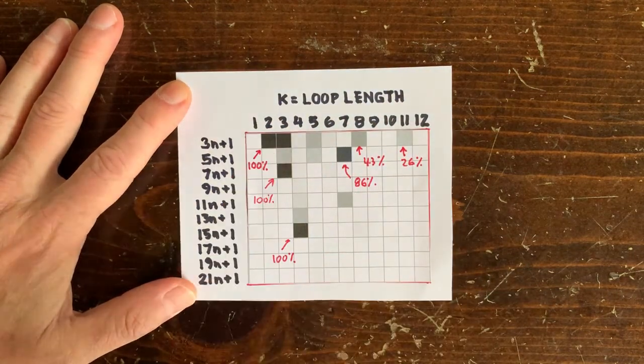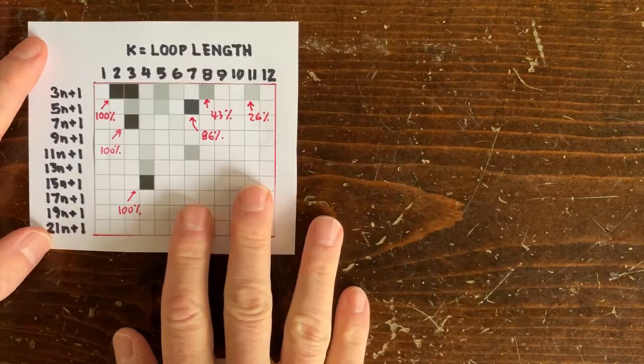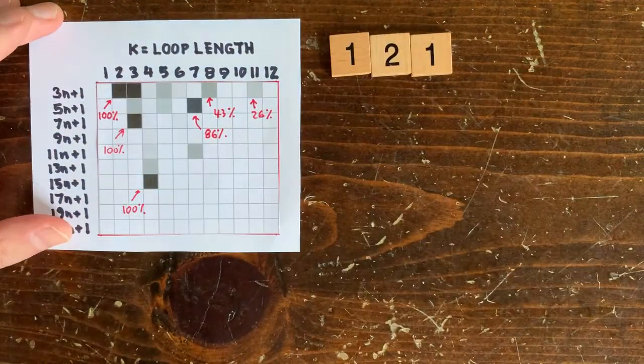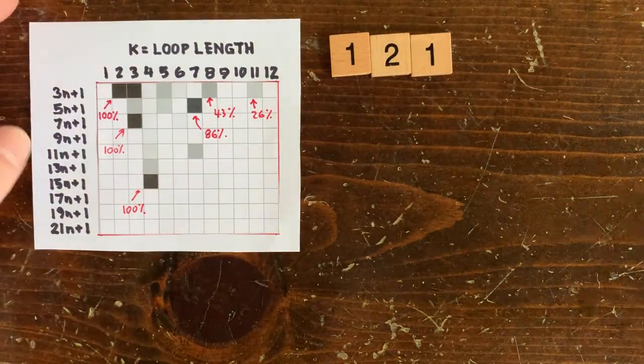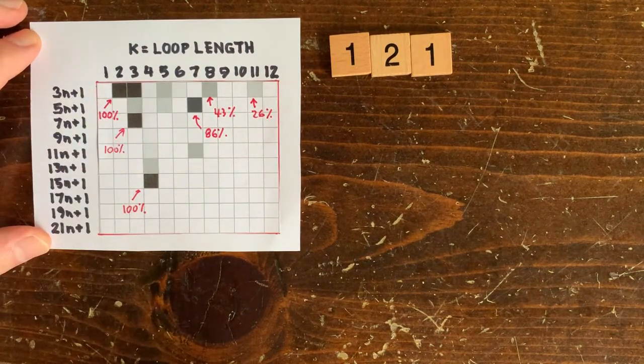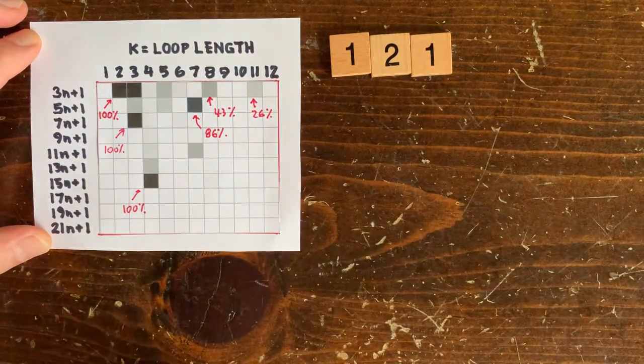The darker boxes are where we should look. So the first box has probability 1, and in fact, it's the 1, 2, 1 loop of length k equals 2. The next box also has probability 1, and it corresponds to the negative 5, 7, 10, 5 loop.